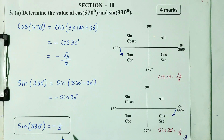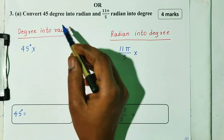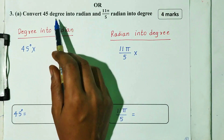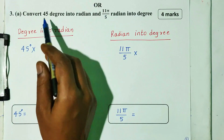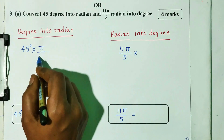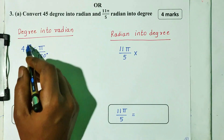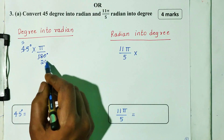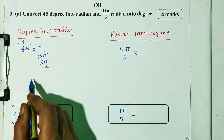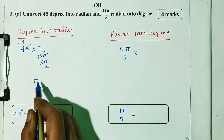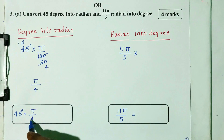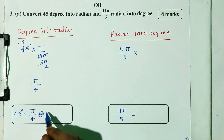Question number 3: convert 45 degrees into radian and 11 pi by 5 radian into degrees. Equation is equal to 4 marks. First, degree into radian. Take 45 degrees and multiply by pi divided by 180. This will simplify. Pi is equal to 4. So this is equal to 45 degree radian, that is equal to pi by 4.